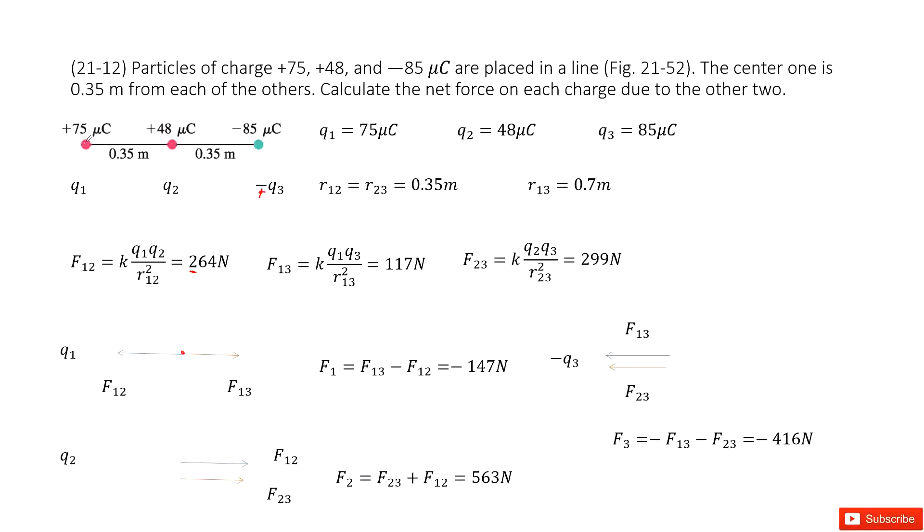And also we look at Q1 and Q3. This is attractive force, so it's pointing to the right. This is called F13. In this way, if we want to get the net force on particle 1, F1 equals F13 minus F12. So the answer is negative 147 newtons.